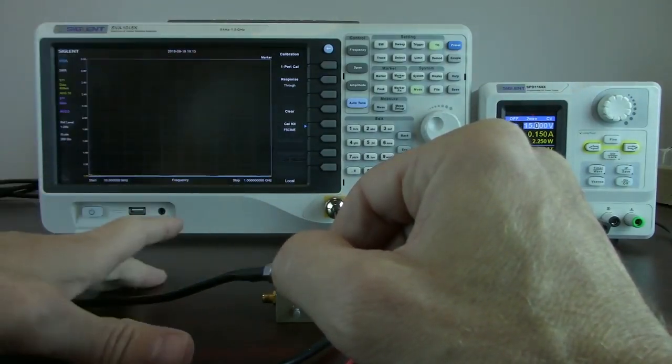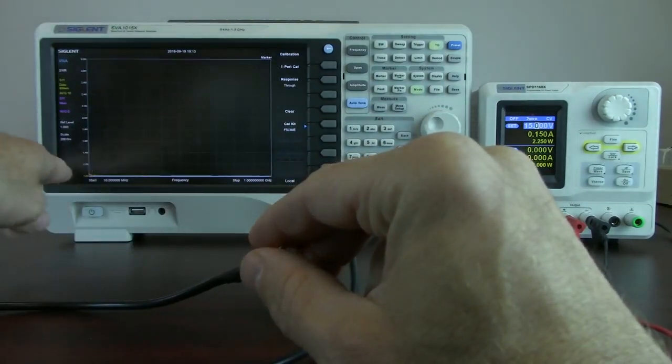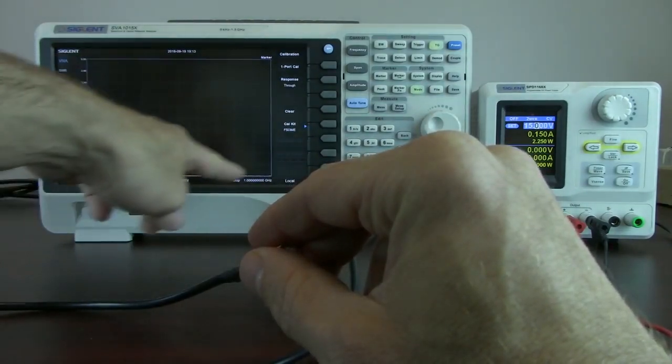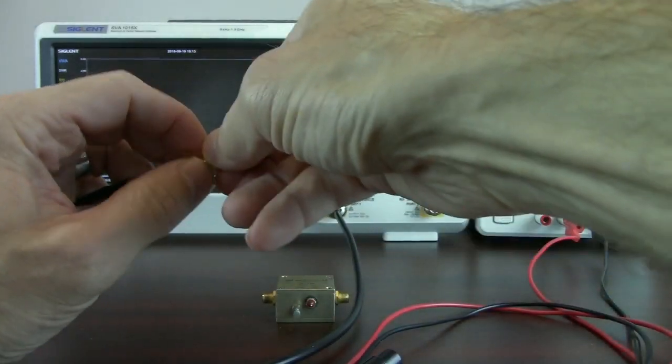SWR of one means that it matches the impedance that we're expecting. So we're working with a 50 ohm system and we've calibrated with a 50 ohm load. And you'll see one to one means we have very little or no reflection. So we've got a VSWR voltage standing wave ratio of one.